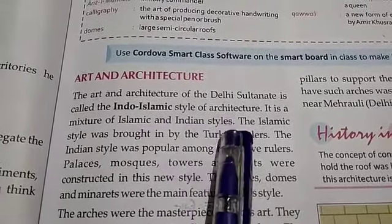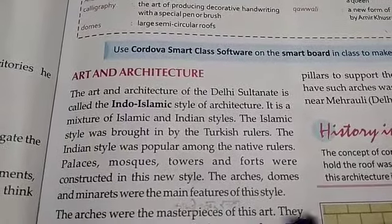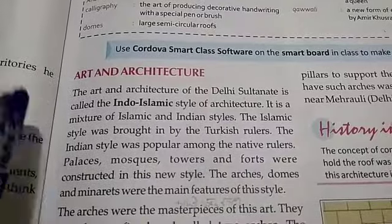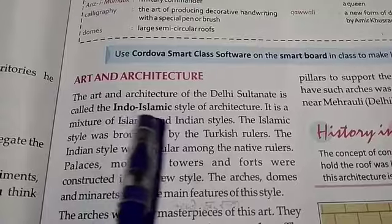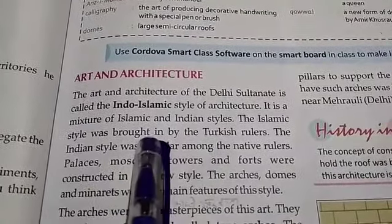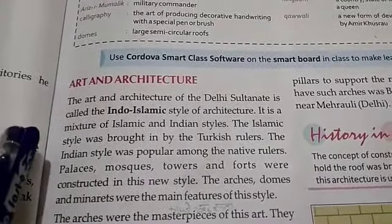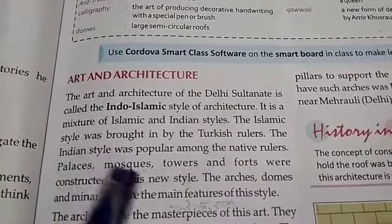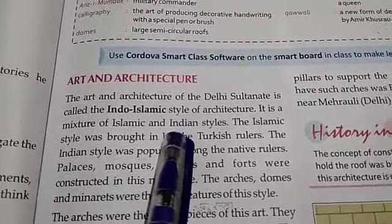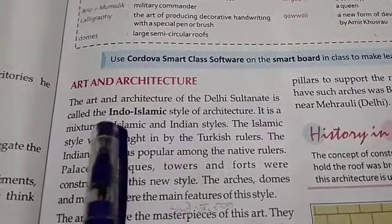The art and architecture of the Delhi Sultanate is called the Indo-Islamic style of architecture. It is a mixture of Islamic and Indian styles. The Islamic style was brought in by the Turkish rulers, while the Indian style was popular among the native rulers. Palaces, mosques, towers, and forts were constructed in this new combined style.